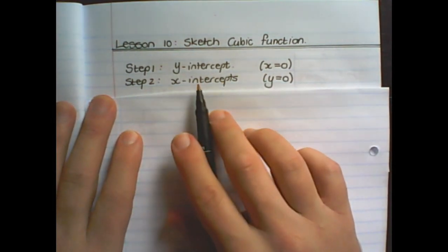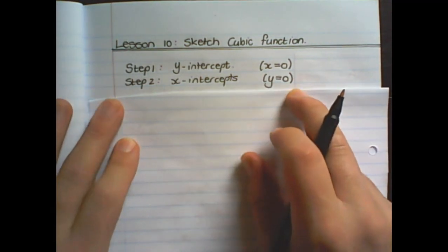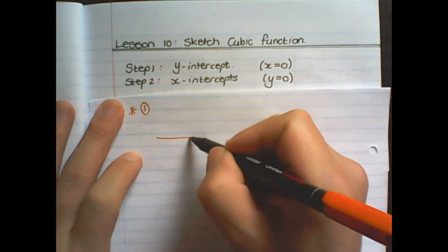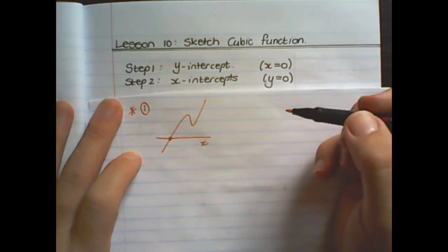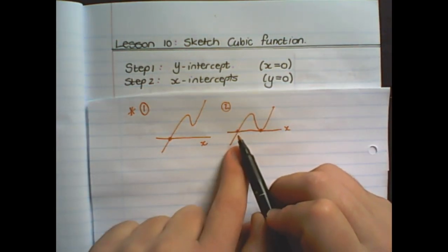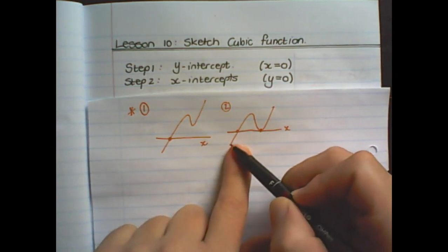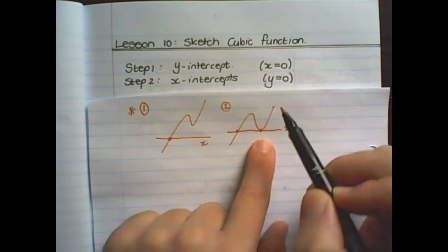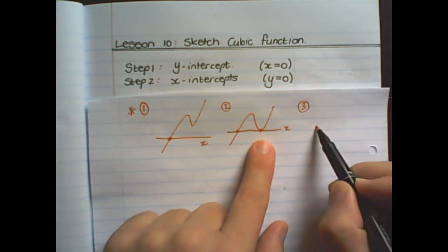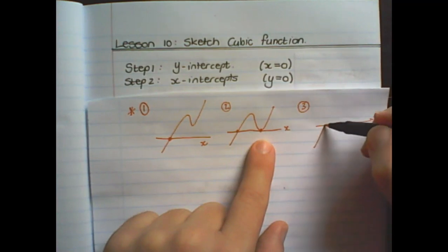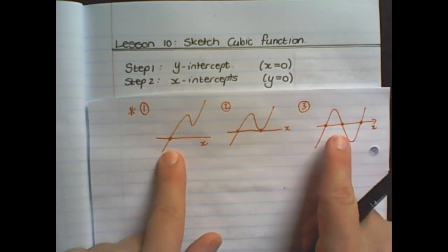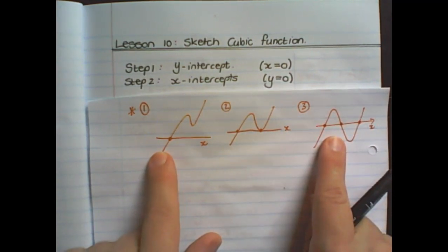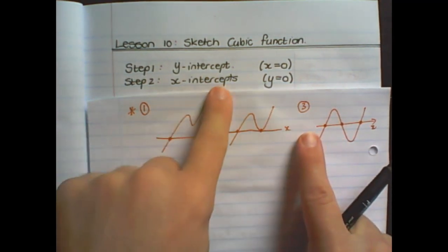Step two is to find the x-intercepts, that is where y is equal to zero. There are three cases: the first is where the cubic function only cuts the x-axis once; the second is two x-intercepts where one value is the function going through the x-axis and the other is a turning point on the x-intercept; and the third is where we have three intercepts at three separate places. Don't be nervous if you find one, two, or three x-intercepts — these are all different variations you can expect.